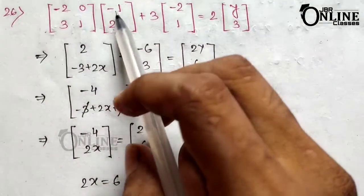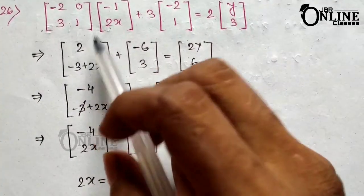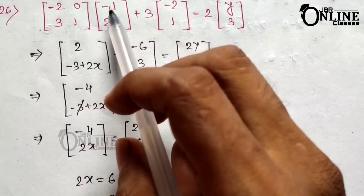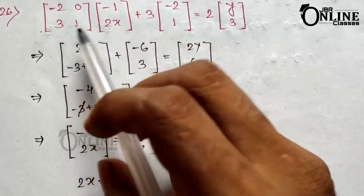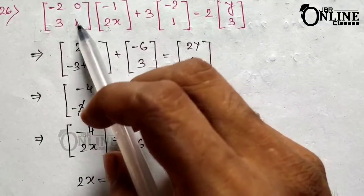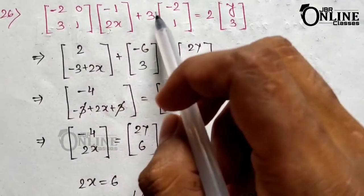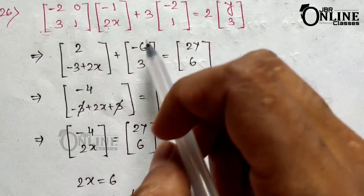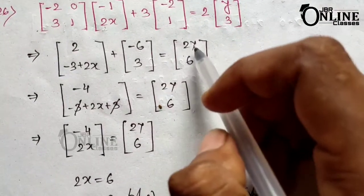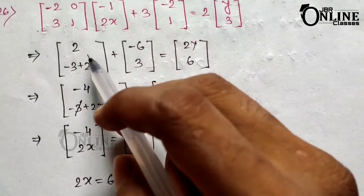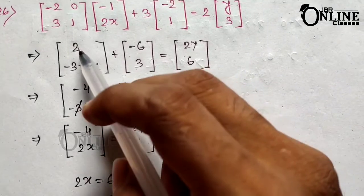Minus 2 into minus 1 equals 2, and 0 into 2 becomes 0. Then minus 1 into 3 plus 1 into x gives minus 3 plus 2x. Next, 3 into minus 2 is minus 3, and 3 into 1 is 3, giving the result equal to 2, y, 6.